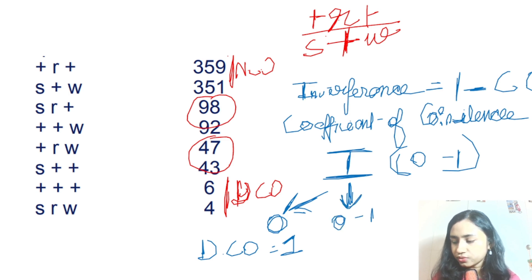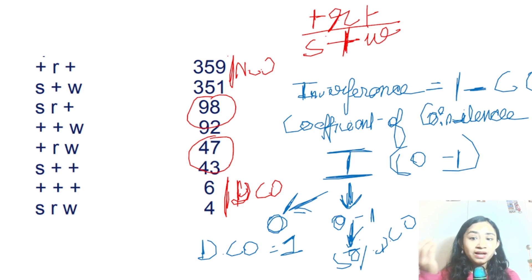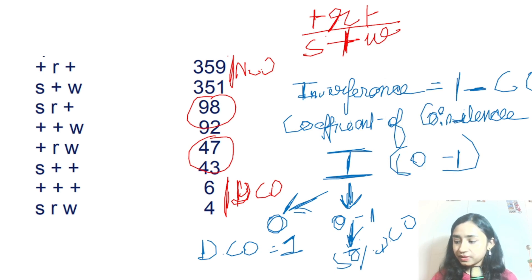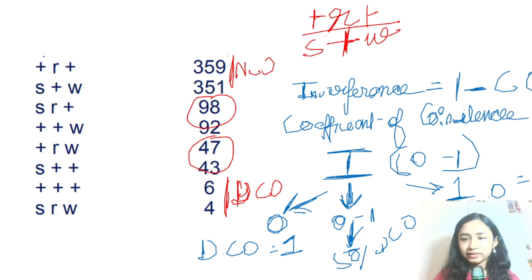If interference is at a middle value between 0 and 1, there is a 50% chance of DCO occurring — a little bit of interference means a lower amount of DCO. If interference is 1, that means there is total interference — no DCO will occur, so DCO will be 0 at that time. So I hope you understood what interference is and what coefficient of coincidence is.